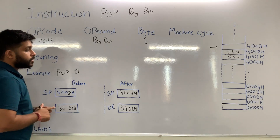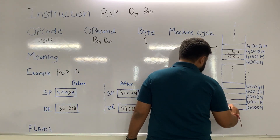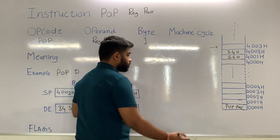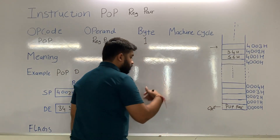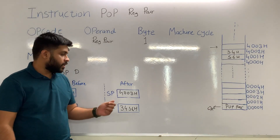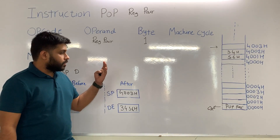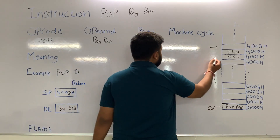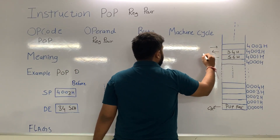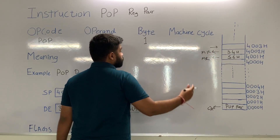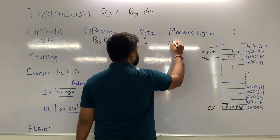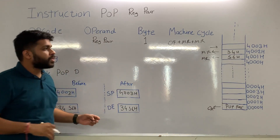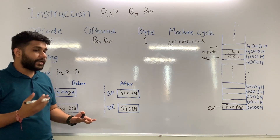Now let's see the machine cycle for POP. This instruction is one byte, so it will occupy only one memory location. The processor will fetch the instruction using opcode fetch, then decode and execute. During execution, the microprocessor reads data from memory into its own registers — it performs memory read two times. So three machine cycles are required: opcode fetch plus memory read plus memory read. No flags will be affected, because this instruction is a data transfer instruction.